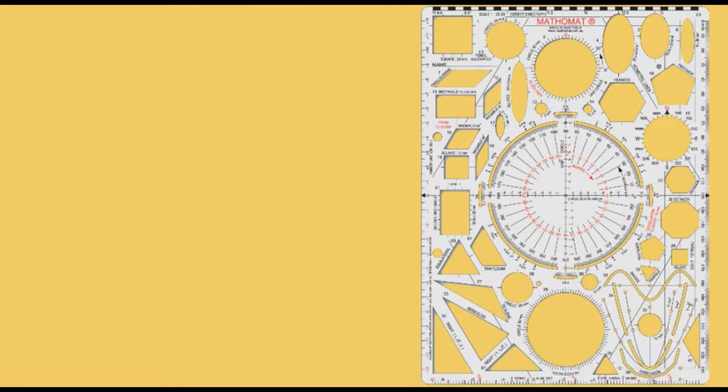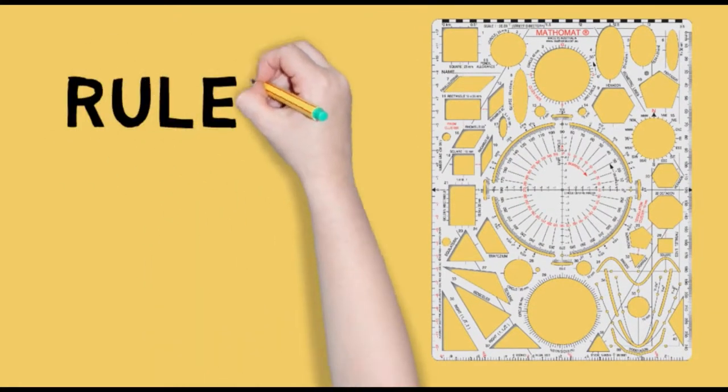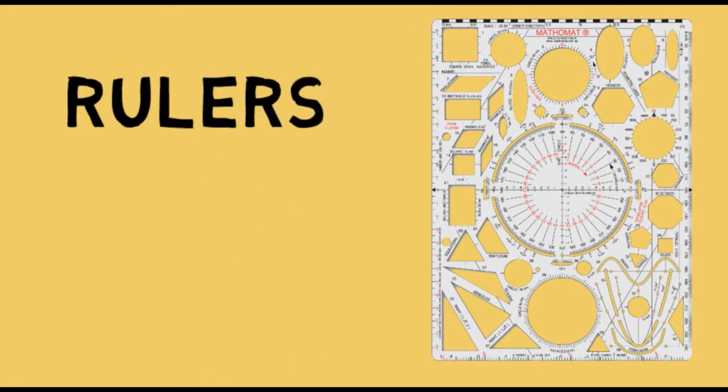The Mathemat drawing template. Rulers. The template has four rulers. A street directory scale ruler of 1 to 20,000. A millimetre scale ruler 0 to 240 millimetres. A number line ruler in two colours. A radian scale ruler which can be used with a unit circle figure 3.